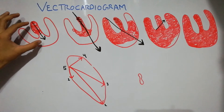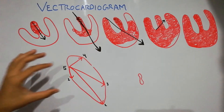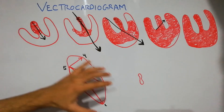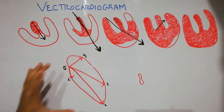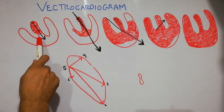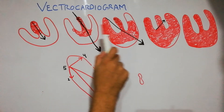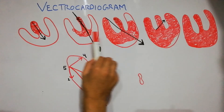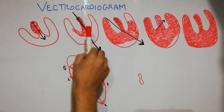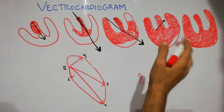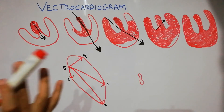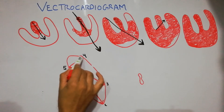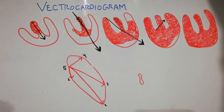If all these vectors are plotted on one graph and their tips are connected, it will give a shape known as the Vectorcardiogram. All these vectors from different steps of depolarization, plotted together, can be seen with the help of an oscilloscope and they form an elliptical shape. This shape is known as the ventricular vectorcardiogram.